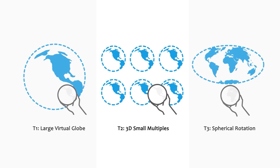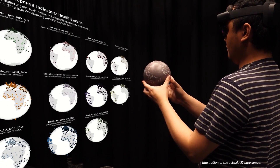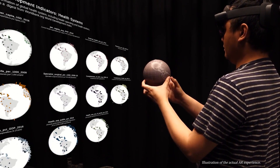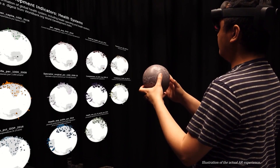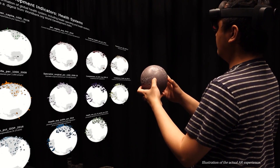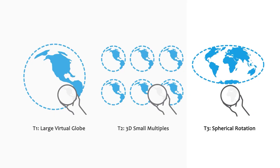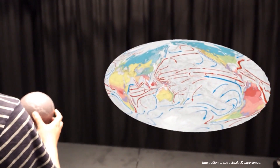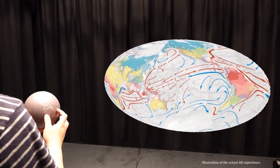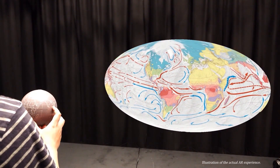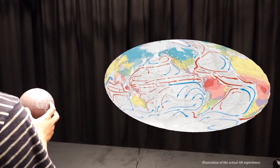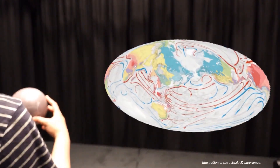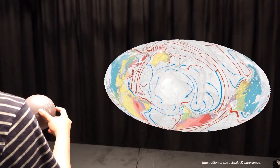The next use case of tangible globe input is 3D small multiples. Small multiples is a common visualization technique for multivariate data. Here, we use the tangible globe to rotate 11 virtual globes representing various attributes of global health data. The last example of tangible globe input is spherical rotation. In this use case, we demonstrate how spherical rotations of the tangible globe can be used to adjust the center of a flat virtual map. We apply a spherical rotation to the geospatial data before it is projected to a flat map.